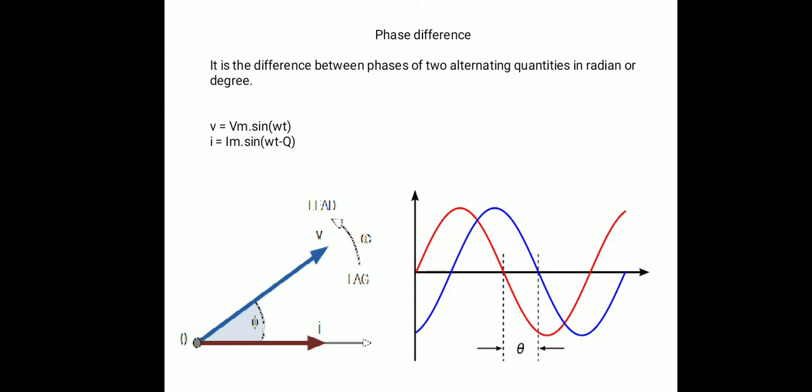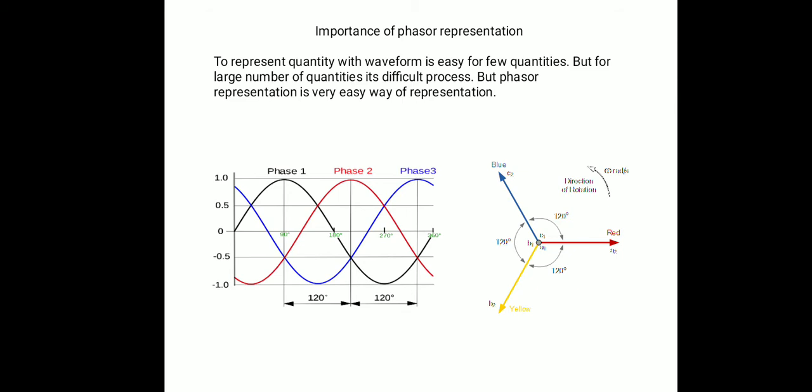In summary, the procedure is: first draw the reference axis; next draw any one phasor on the horizontal axis — here the current phasor, with length equal to the peak value of the current waveform; then draw the voltage phasor ahead of the current phasor by theta degrees, with length equal to the peak value of the voltage waveform. That gives the phasor diagram for voltage and current.